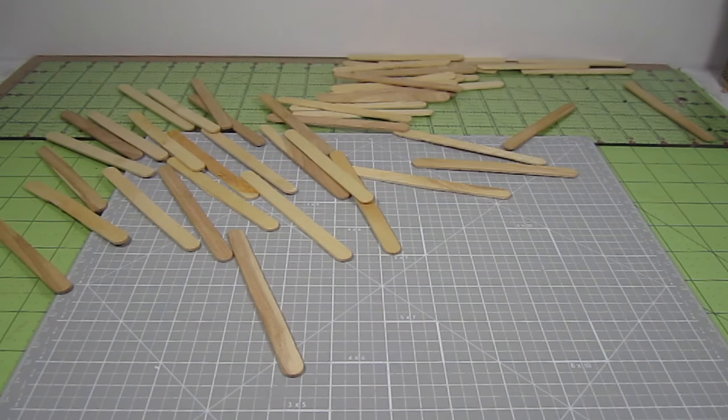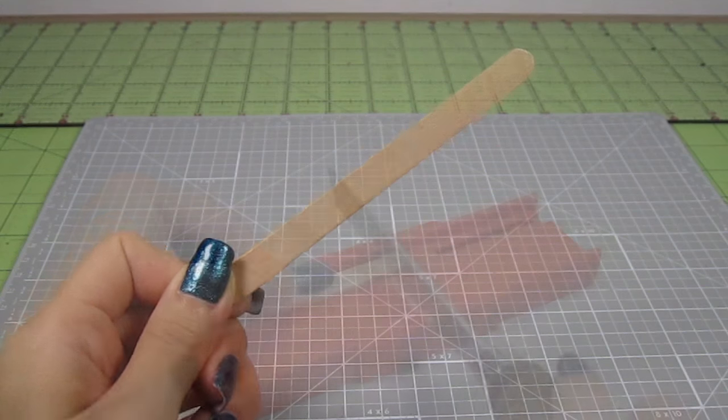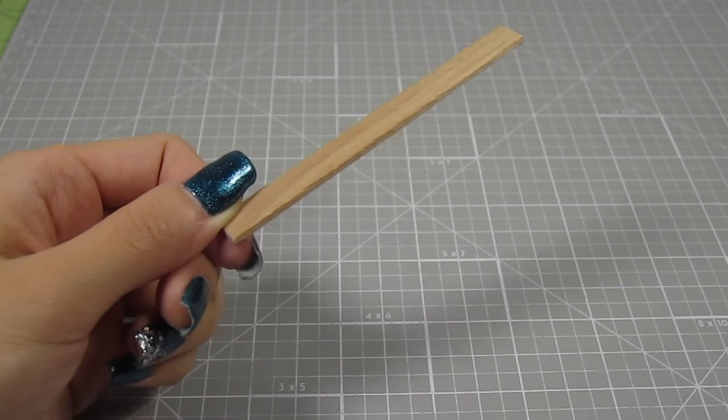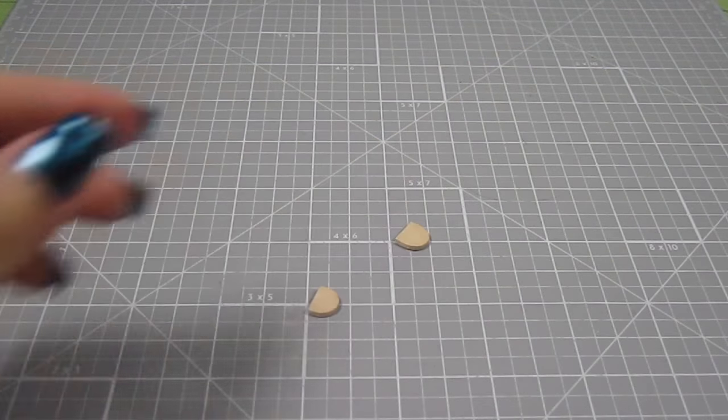The first thing you need is some standard popsicle sticks. Take one and cut the round ends off. I just use a mitered hand saw to do this. You want to end up with a 3.5 inch length. Don't throw away the ends. We'll use them later.